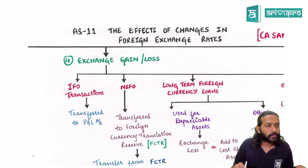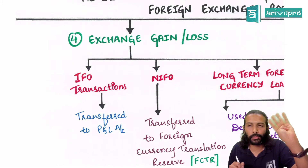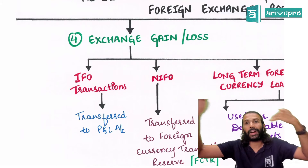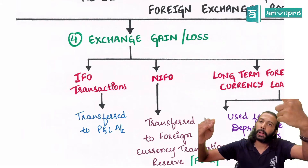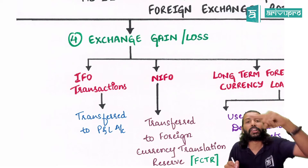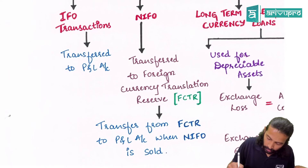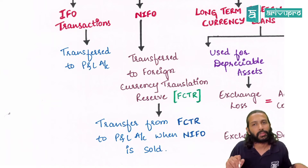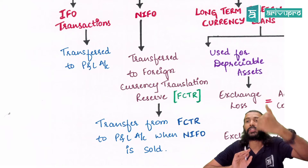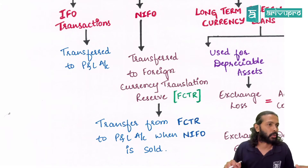Next, exchange gain or loss. For Integral Foreign Operations (IFO), any forex gain or loss goes straight to P&L. For Non-Integral Foreign Operations (NIFO) — the father-and-son-two example — exchange gain or loss is not transferred to P&L but is instead accumulated in a reserve called Foreign Currency Translation Reserve (FCTR). The amount stays in FCTR as long as you hold the investment. Once the investment is sold, the amount moves from FCTR to P&L.